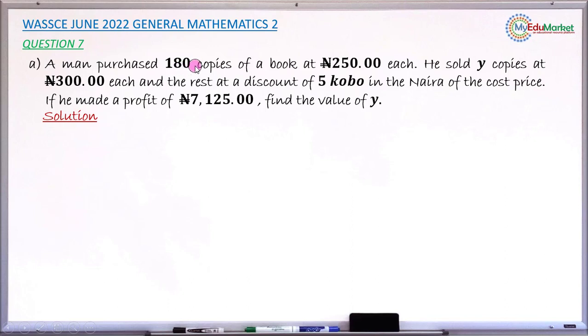The man bought 180 books at 250 naira each. So total cost is 180 multiplied by 250 naira. If this multiplication is done correctly, you have 45,000 naira. This would be the total cost of those 180 books.